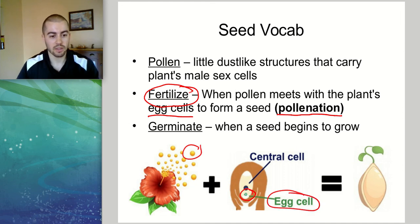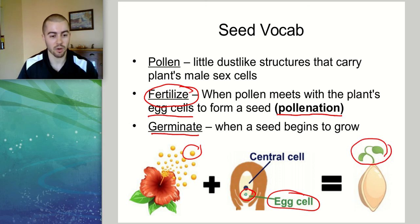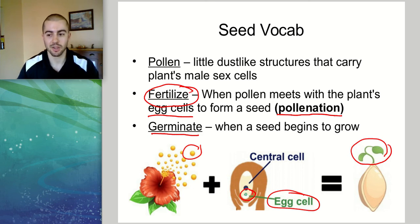The last vocab term we need to know is germinate — that just means when a seed starts to grow. When a seed starts to grow, you'll end up with this little sprout of a plant growing out of it, and that's called germination. Thanks for watching this short video on seeds.